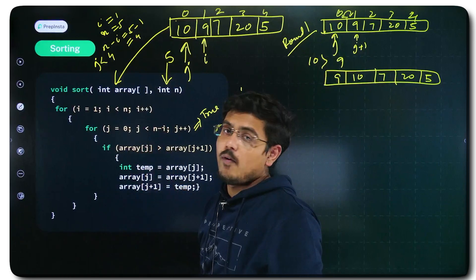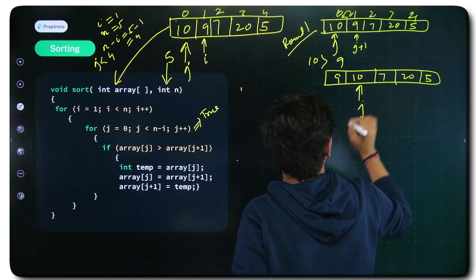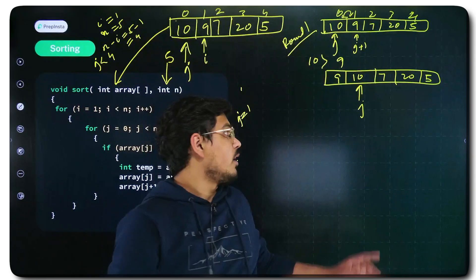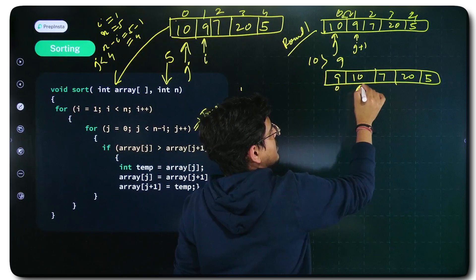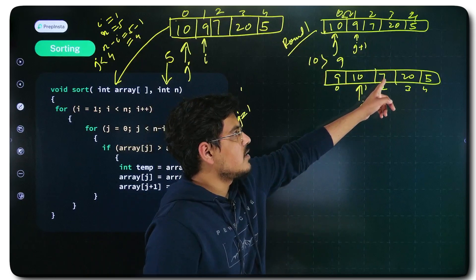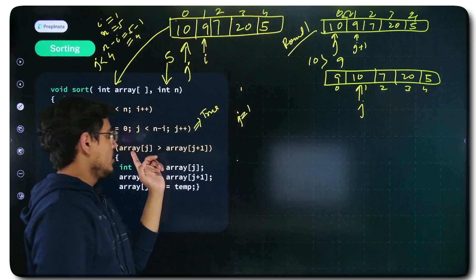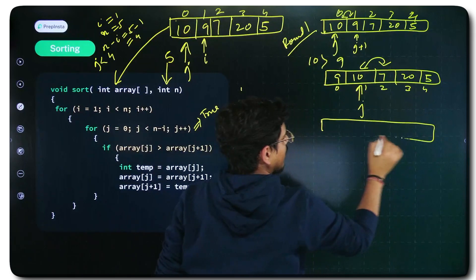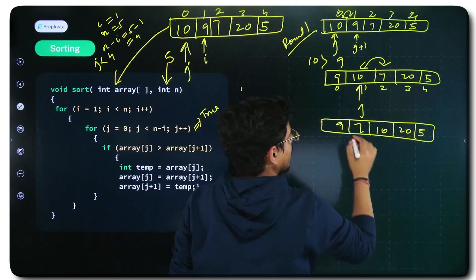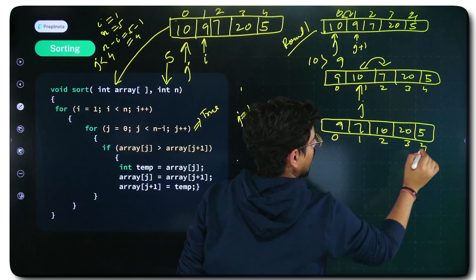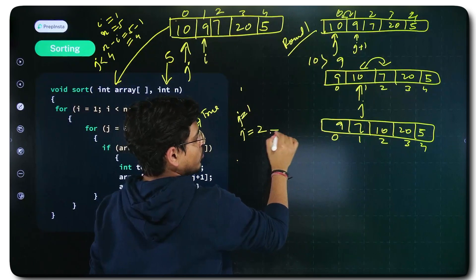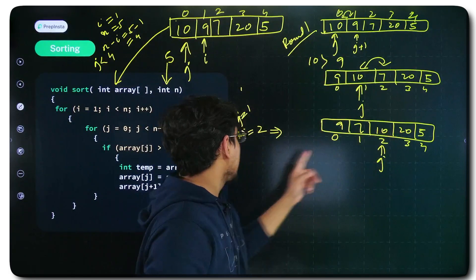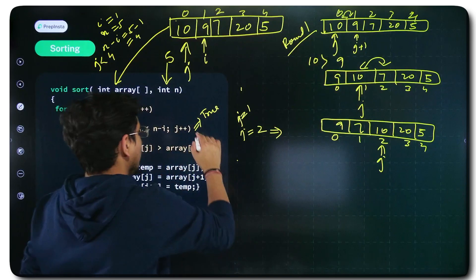j is incremented — the loop isn't over. j becomes 1, pointing at index 1. Now j is at 10 and j+1 is at 7. 10 is greater than 7 — the condition is fulfilled again, so swap: giving 9, 7, 10, 20, 5. j is incremented again, j becomes 2, pointing at index 2.